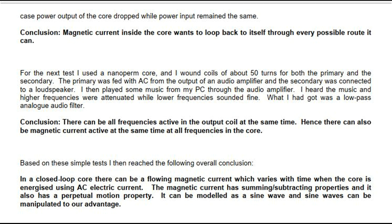For the next test a nanoperm core was used with coils of about 50 turns for both primary and secondary. The primary was fed with AC from an audio amplifier and the secondary was connected to a loudspeaker. Music was played through it: higher frequencies were attenuated while lower frequencies sounded fine — a low-pass analog audio filter. Conclusion: all frequencies can be active in the output coil simultaneously, meaning magnetic current can be active at all frequencies in the core at the same time. Overall conclusion: in a closed loop core there can be a flowing magnetic current which varies with time when energized using AC. This magnetic current has summing/subtracting properties, a perpetual motion property, and can be modeled as a sine wave.